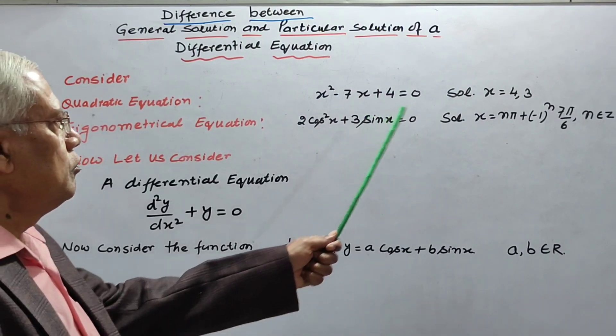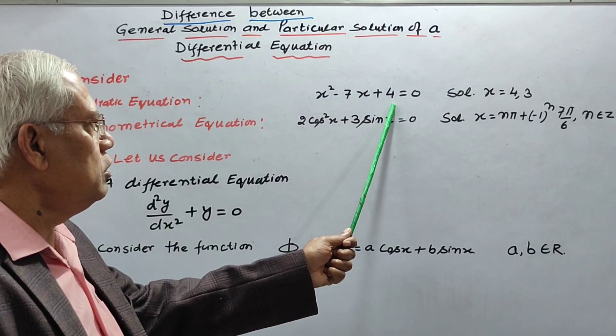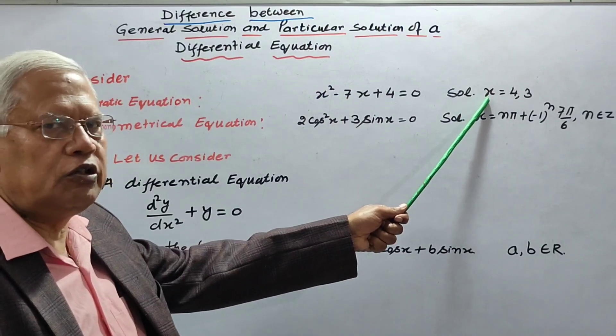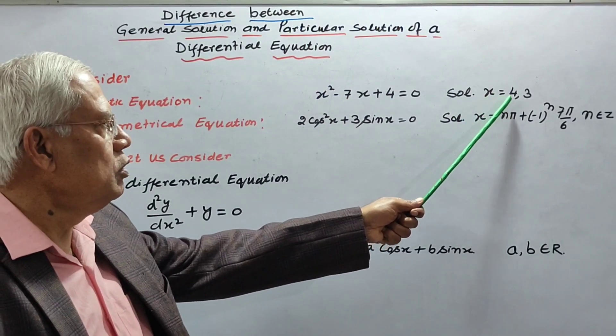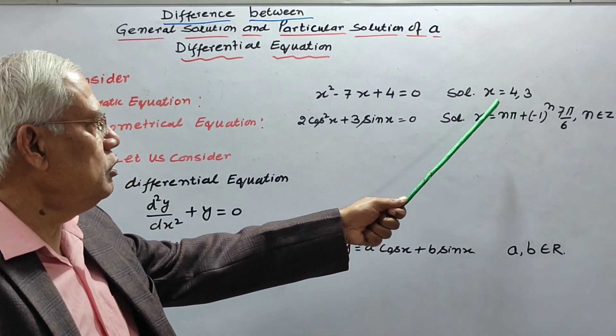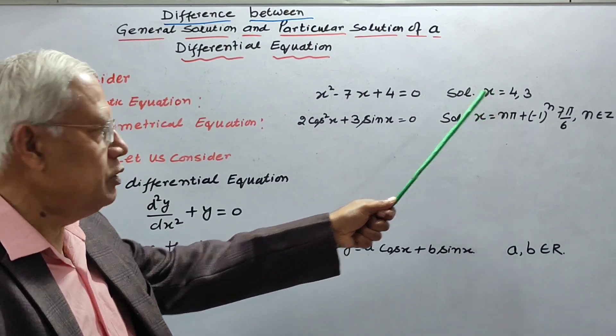By solving this quadratic equation, you will get its solution: x equal to 4 and 3. So these are simply numbers.